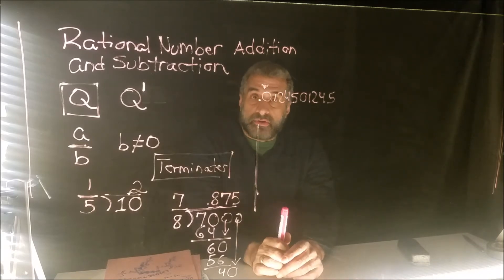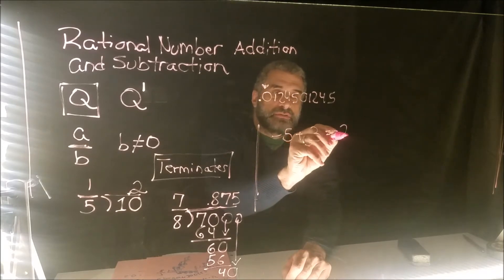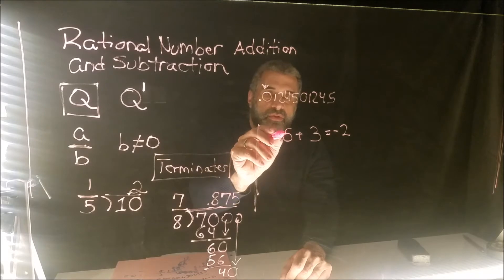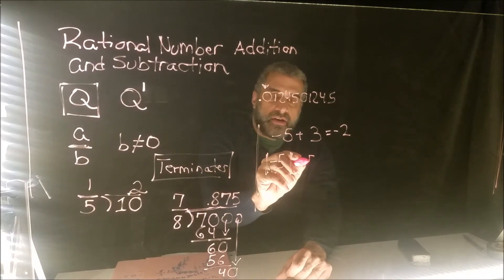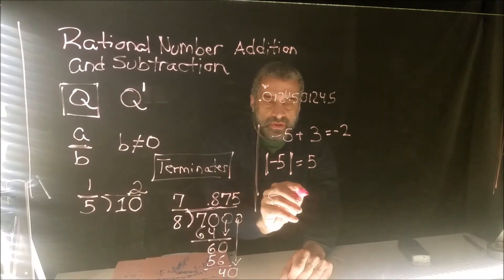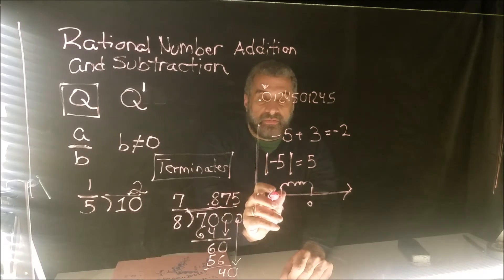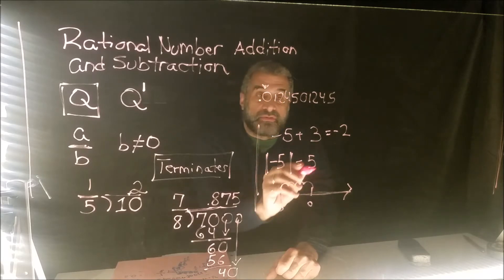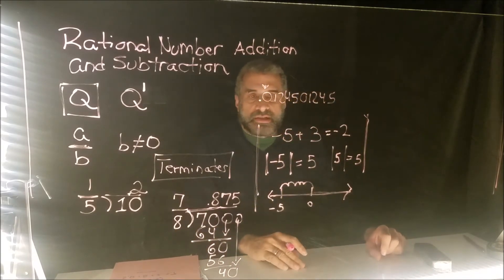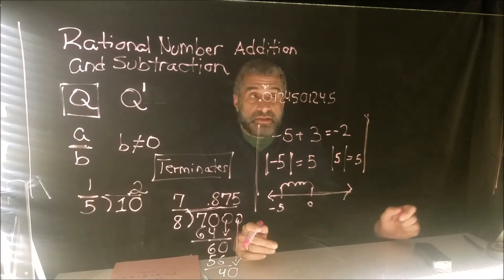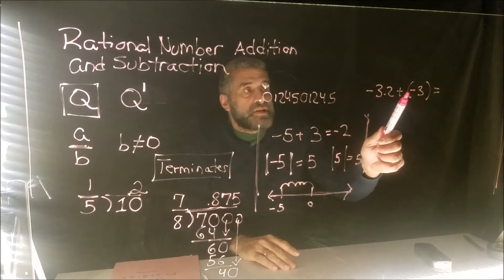We can add rational numbers the same way we added integers, and integers are rational numbers. For example, negative five plus three equals negative two. We take the number with the highest absolute value — the absolute value of negative five is five, meaning it's five away from zero — and that determines the sign of the answer.